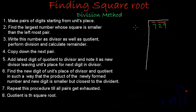Next, the step says: write this number as divisor as well as quotient. So I write 2 here as the divisor, and in the quotient direction I write 2 as well. So 2 is written in the place of both divisor and quotient.